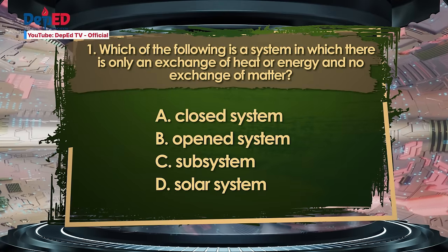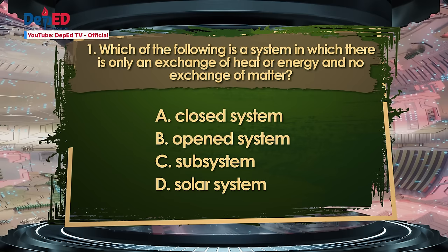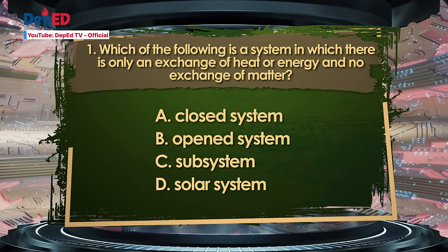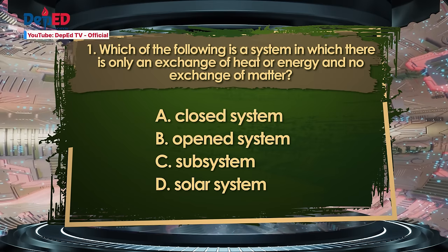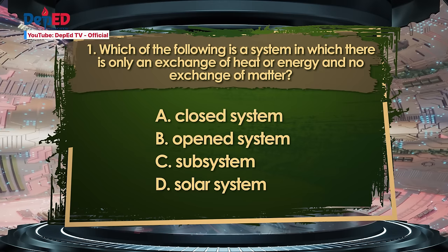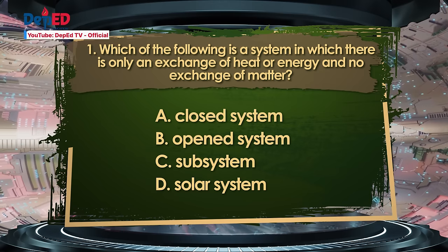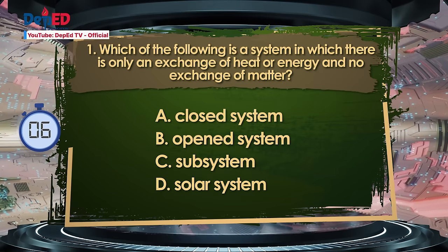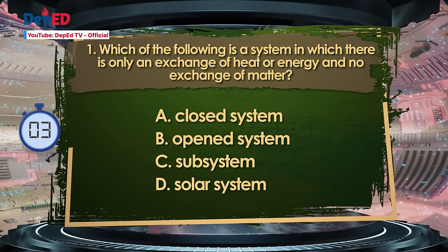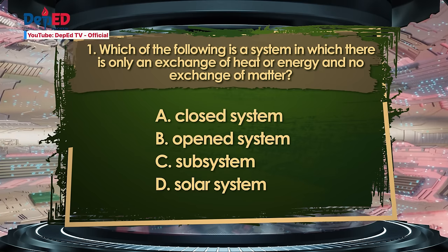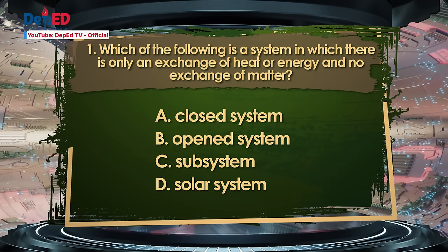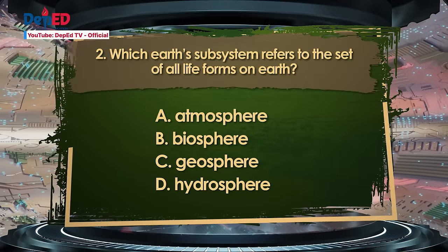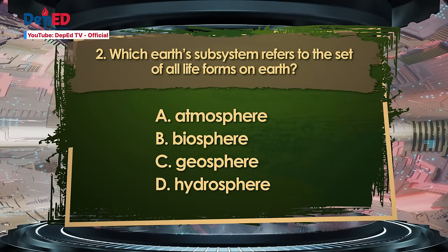Number 1. Which of the following is a system in which there is only an exchange of heat or energy and no exchange of matter? A. Closed system. B. Open system. C. Subsystem. D. Solar system. The correct answer is A — Closed system.